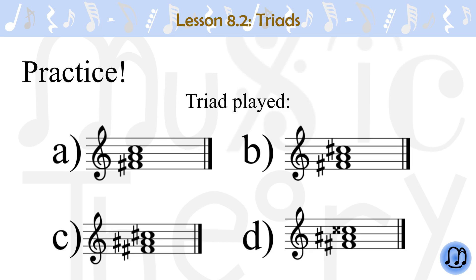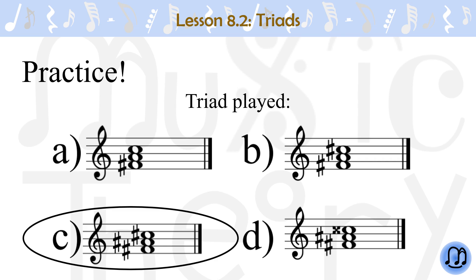Triad played. C. The interval between the bottom two notes is a major third, and the interval between the top two notes is a minor third.